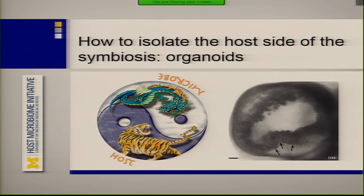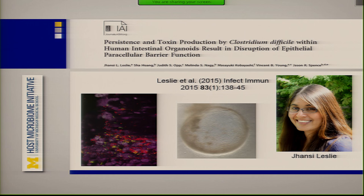So how can we isolate, in particular, the symbiosis between the host and the microbe itself? As opposed to Rob, who focuses on the microbiota, what if we take the microbiota out of the way and look at the interaction of the pathogen with the host — in this case, the human host. This is some work published last year where we started looking at toxin production by C. difficile and persistence within so-called human intestinal organoids. This work was done by my graduate student, John Leslie, who will be leaving in a couple months for a postdoc.